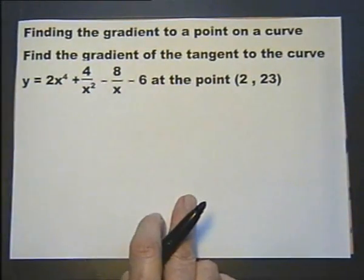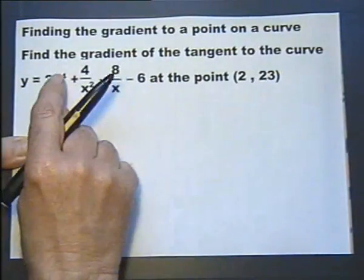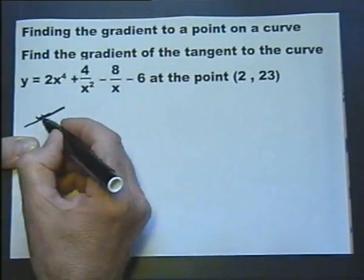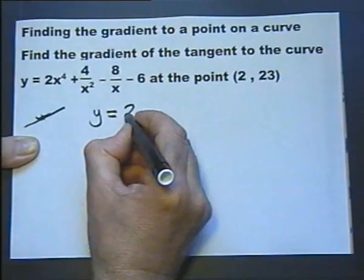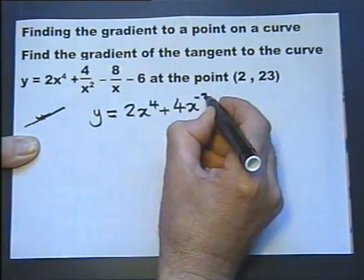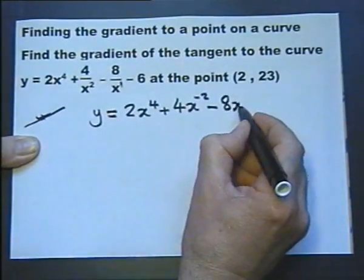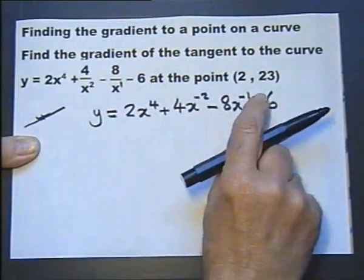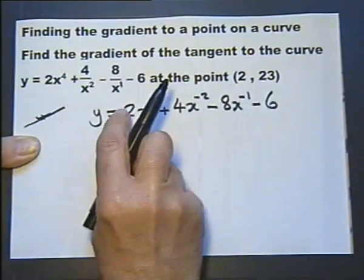Let's run through that idea again — finding the gradient to a point on a curve. I've got to find the gradient of the tangent to this particular curve. Part of it looks like that, and that coordinate is on there. Before we can differentiate, we actually have to rewrite this equation. We need to appreciate that 4 over x squared can be written as 4x to the power minus 2, and minus 8 over x can be written as minus 8x to the power minus 1. When x=2, substituting into the original equation works out the y-coordinate of 23.